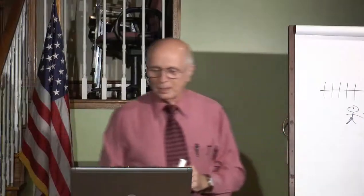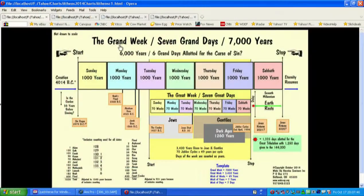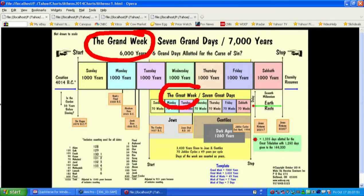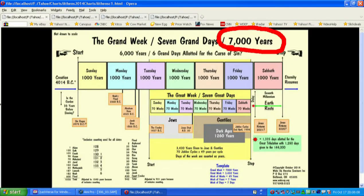This little chart shows you, up here at the very top, the grand week. There are two weeks described on this chart. The grand week is made up of 7,000 years. A day with the Lord is as a thousand years. So we have Sunday as a thousand years, Monday as a thousand years, and so forth.